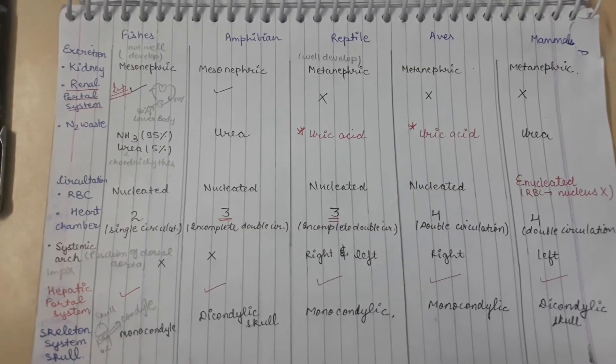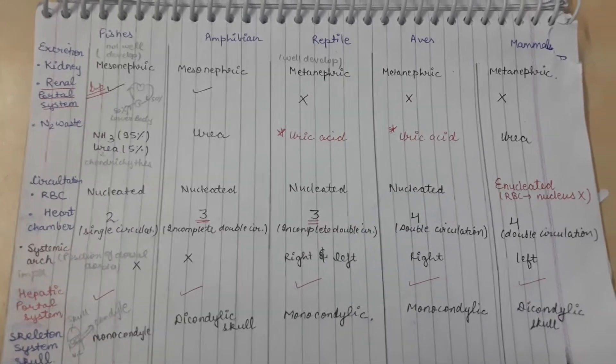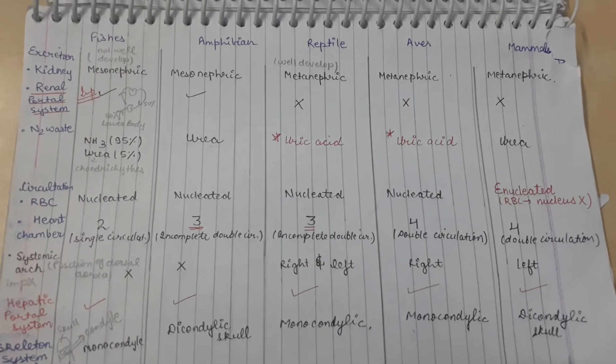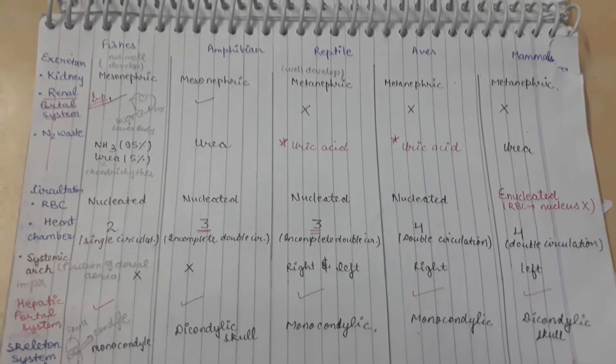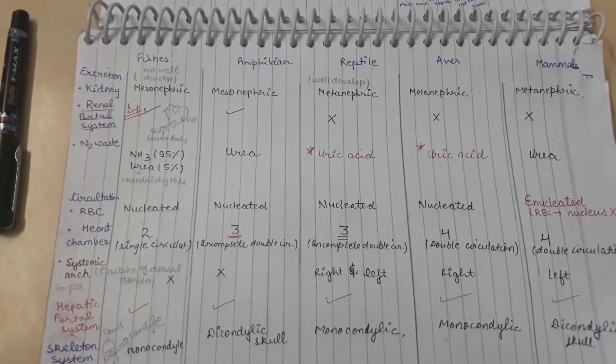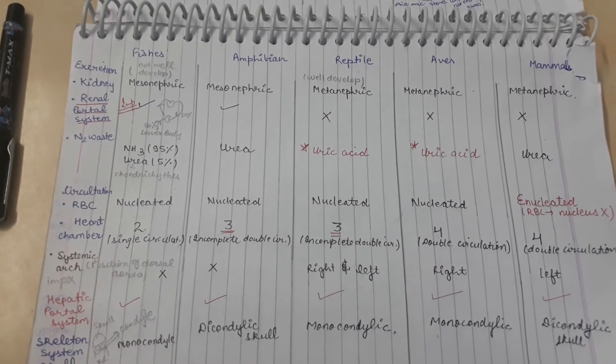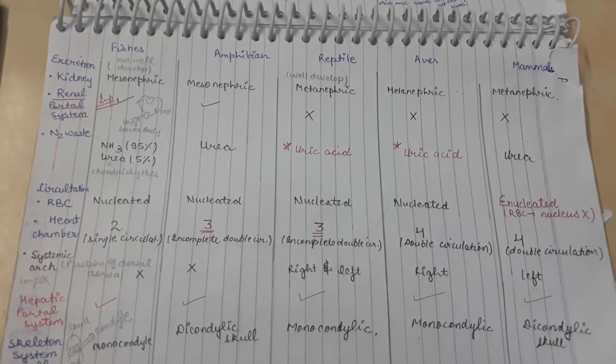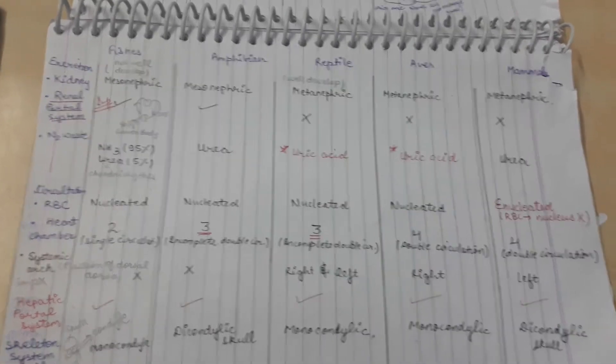Circulation: RBCs are only enucleated in mammals. Heart chambers - we all know we have a four-chambered heart with two auricles and two ventricles. Fishes have two chambers, amphibians and reptiles have three, so it's known as incomplete double circulation. Aves and mammals have four each. An example is the crocodile which has a four-chambered heart.